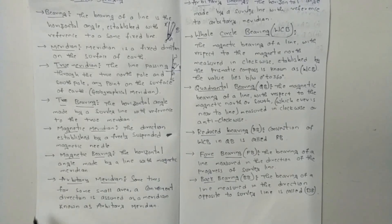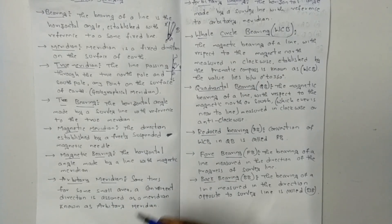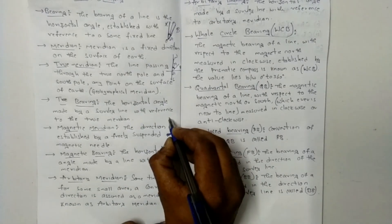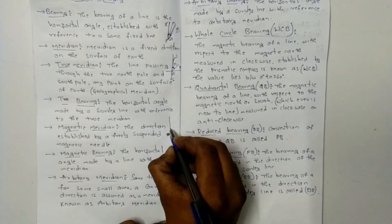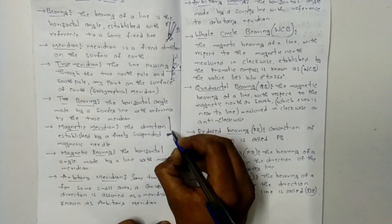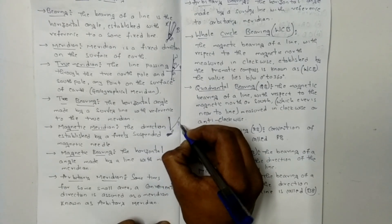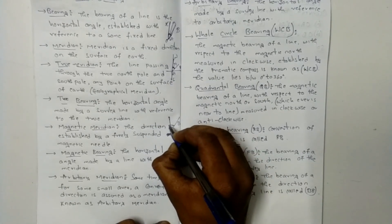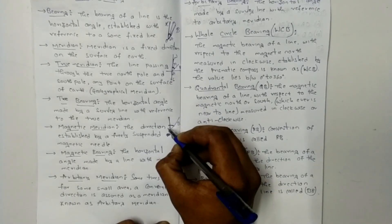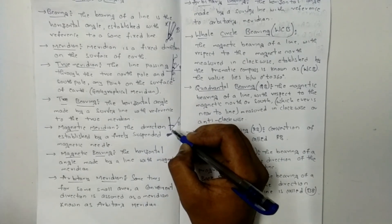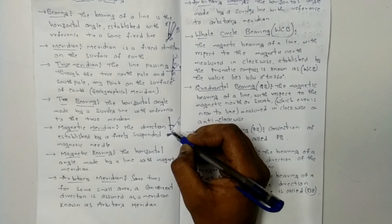Magnetic bearing: the horizontal angle made by a line with the magnetic meridian. This angle measured from the magnetic meridian to the survey line is called the magnetic bearing.